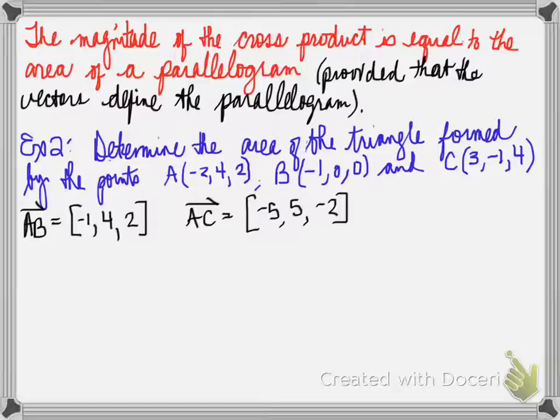So determine a vector AB and AC. So AB, when you add them together, is going to be negative one, four, and two. And AC, the vectors on that is going to be negative five, five, and negative two.